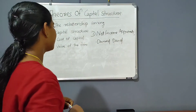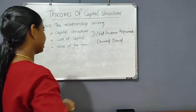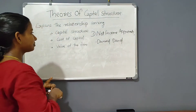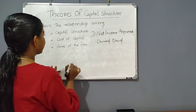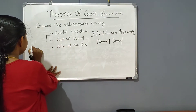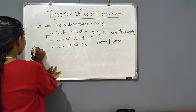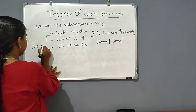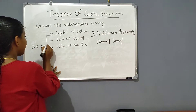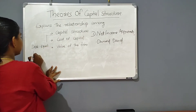In the Net Income approach, we say debt is equal to the ratio. In this capital structure, debt is equal to the ratio, and a debt fund is created in a business organization.